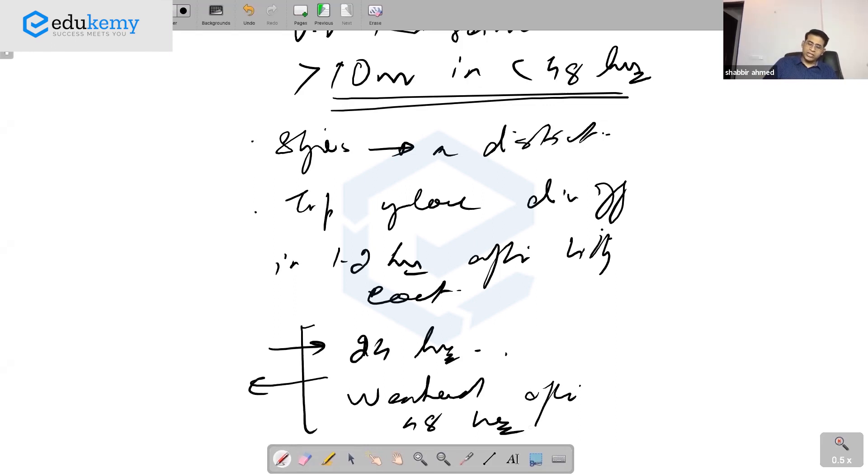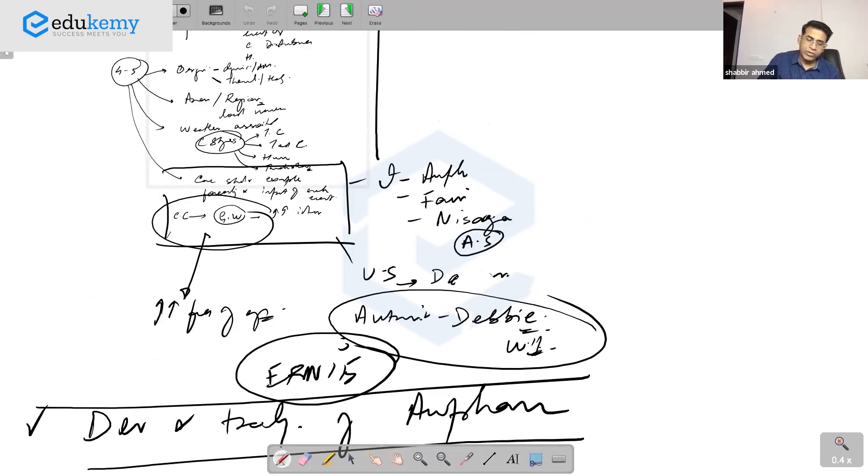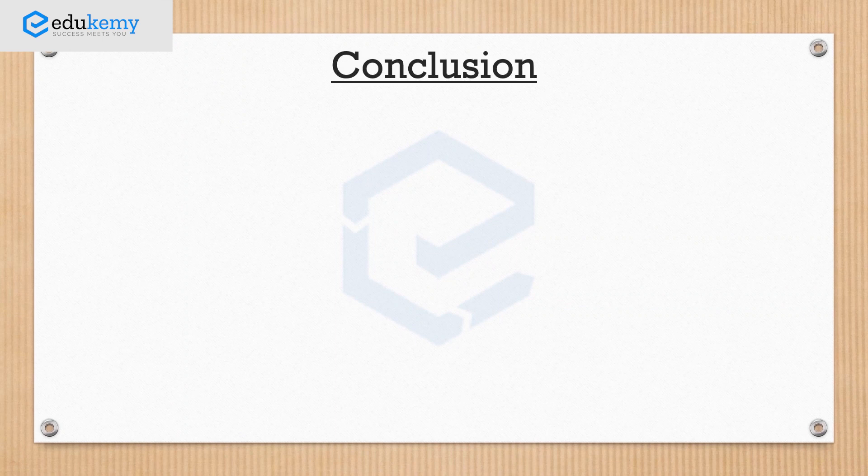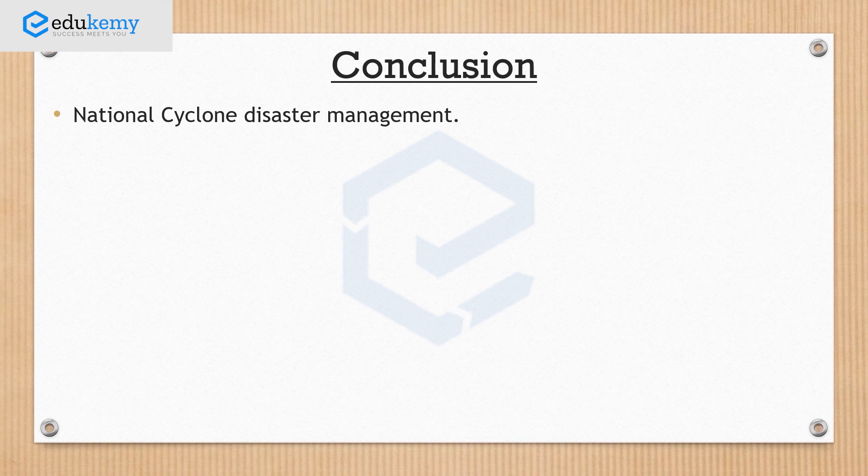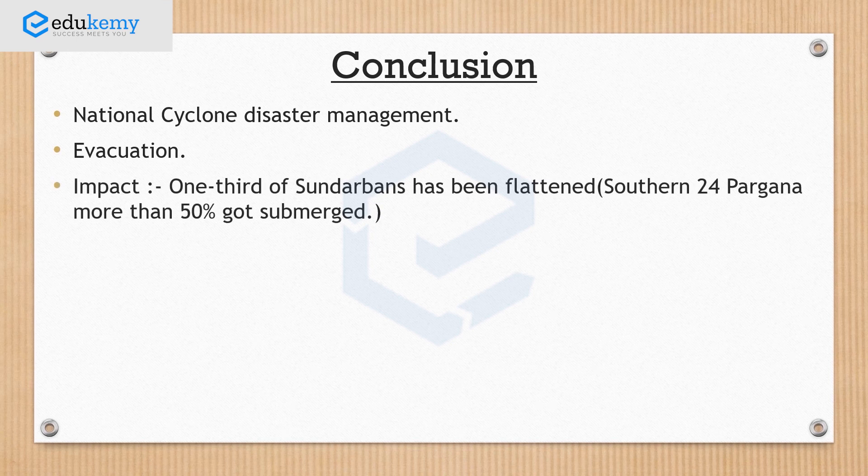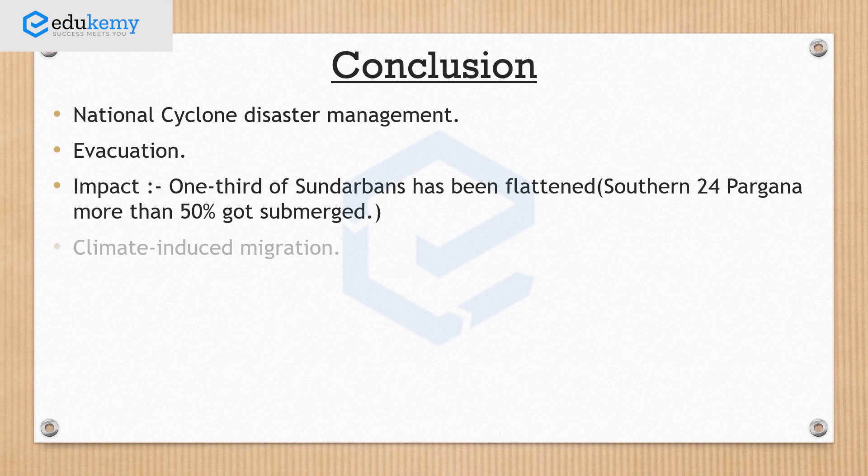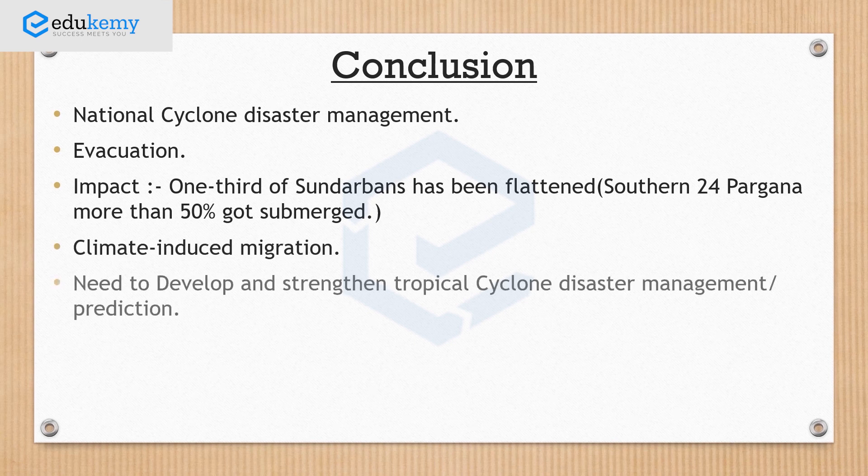This also caused massive destruction. What's the origin, location, and weather associated? Because I'm following the format suggested - talk about origin, location, and weather. If the question is already about the case study, you don't have to add much on this. Directly go towards conclusion. In conclusion: National Cyclone Disaster Management, talk about evacuation, discuss the impact - almost one-third of the Sundarbans was flattened, more than 50 percent of South 24 Parganas got submerged, climate change induced migrations.